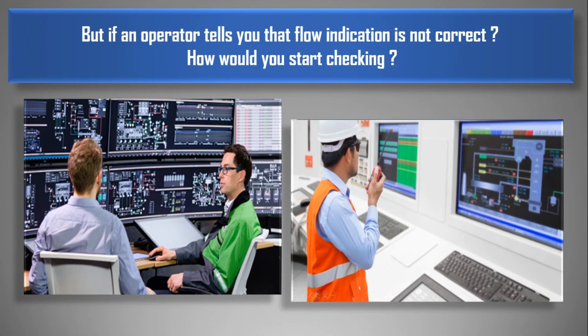If an operator tells you that the flow indication is not correct, how would you start checking? Sometimes a DP transmitter provides inaccurate readings, so here are some steps involved in checking the transmitter.